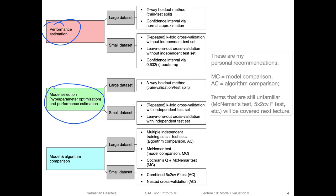Another task is model selection, which includes hyperparameter tuning. If you recall from last week's lecture, there's a difference based on how much we care about relative versus absolute performance. For model selection, we don't really need to get the absolute performance right — it's sufficient to have the relative performance estimated well. That means we can correctly rank the models by performance: model one performs better than model two, which performs better than model three, and so forth — so we can order the models and pick the best one.